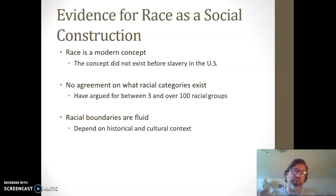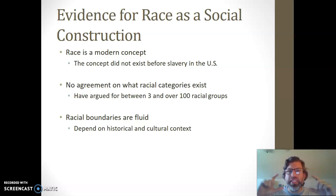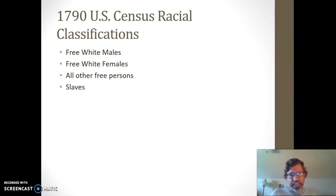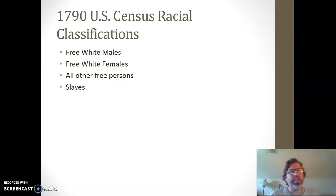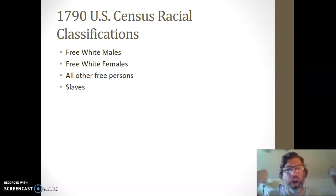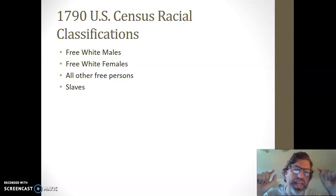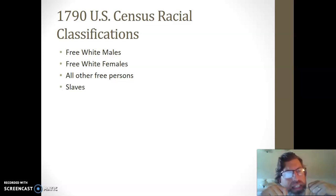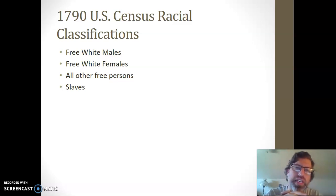The census form we've received more recently has a box for race, and that box looks very differently than it did at the origin — the classification schema looks very different today than it did at the start. In 1790, the first census in the United States, these were the racial classifications that existed — what you could mark yourself off as. You could either be a free white male, a free white female, all other free persons, or slaves. Notice the way that slavery — the institution of slavery — is bound up with the creation of racial categories right here.